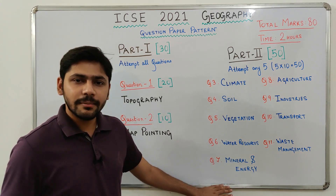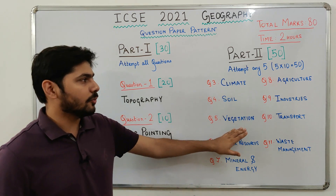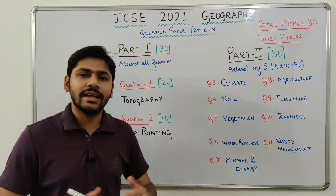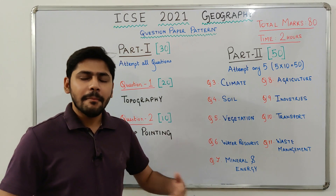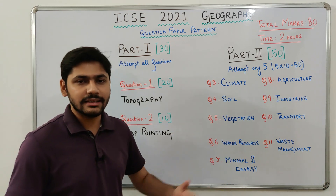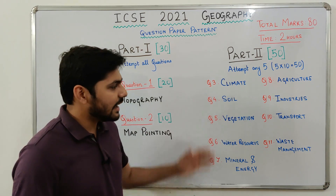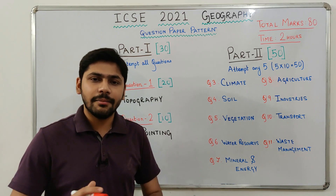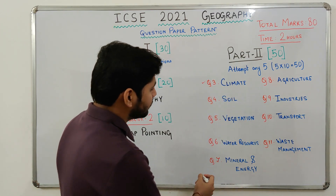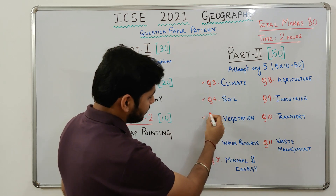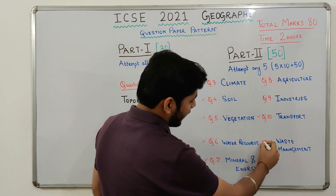This is easy because you can study just 6 to 7 chapters and be sorted for Part 2, potentially scoring 50 out of 50. Many students ask what chapters to prepare to maximize scores. My preference is to study everything, but from an exam point of view, I prefer: climate, soil, natural vegetation, water resources, mineral and energy resources, transport, and waste management — that is 7 questions.